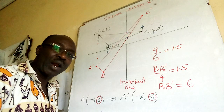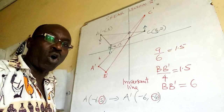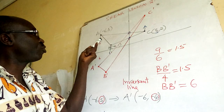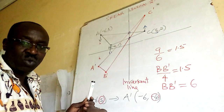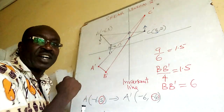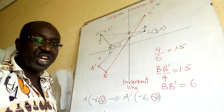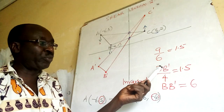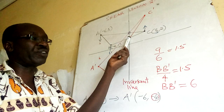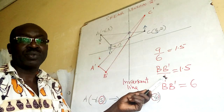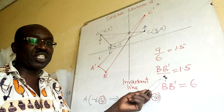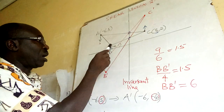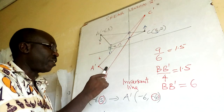Once we have scale factor 1.5, it applies across all the points. Point B will do the same movement — same direction downward — because they are on one side of the invariant line. B has to move to a new place. How far is B from the invariant line? Four steps. So this movement over the vertical distance gives scale factor 1.5, therefore the movement is six steps. Count from B: one, two, three, four, five, six.